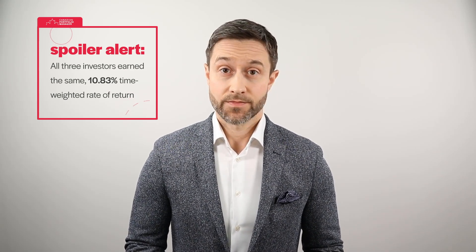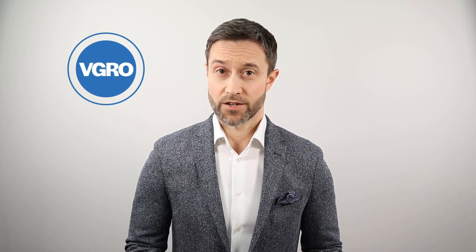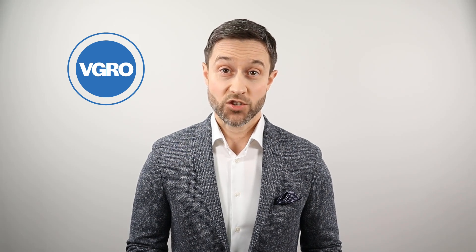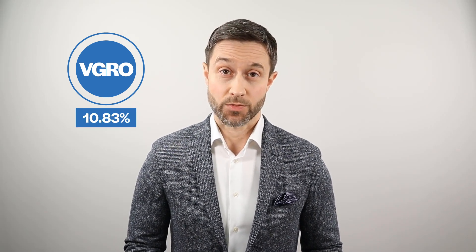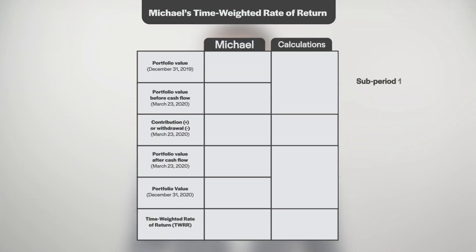After any Scooby moment you might have about that, you'll realize this makes sense. All three investors held VGRO and only VGRO all year, so in this super simplified example, their time-weighted rates of return will be identical to the 2020 return of VGRO, which was also 10.83%. We'll start by calculating Michael's return for sub-period 1, December 31st, 2019 to March 23rd, 2020. During sub-period 1, his portfolio started at $100,000 and ended at $77,985. Dividing the ending value by the beginning value and subtracting 1 provides us with a sub-period return of negative 22.01%.